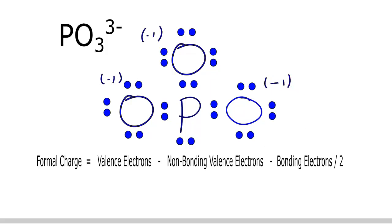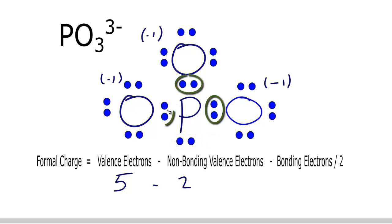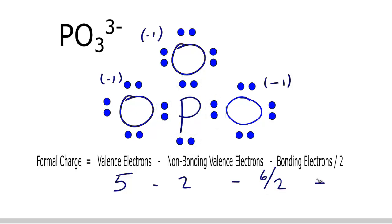Let's look at the phosphorus atom and see what the formal charge on it is. Phosphorus is in group 15, also called 5A, and it has 5 valence electrons. For non-bonding valence electrons, phosphorus only has these 2 right here — we subtract those. For bonding electrons, we have 2, 4, 6 — so we subtract 6 divided by 2. So 5 minus 2 is 3, and 3 minus 6 over 2 is 0. The formal charge on this phosphorus is 0. And we're done.